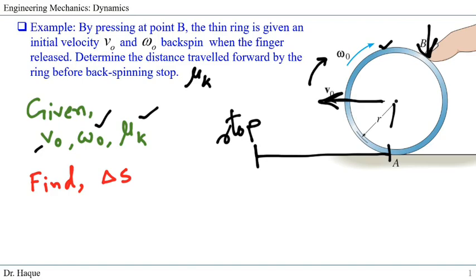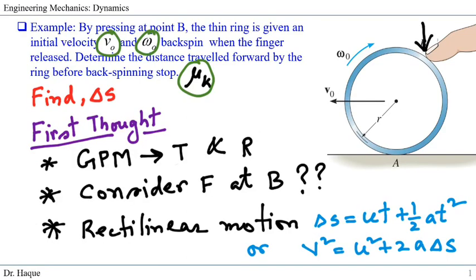Given are the initial velocity v₀, backspin angular velocity ω₀, and the dynamic friction coefficient μk — all in variable form, no numbers. We need to find the distance traveled by the ring. The first thing that comes to mind is that it's a general plane motion problem, since it has both rotation and translation — it has angular acceleration and translational motion.